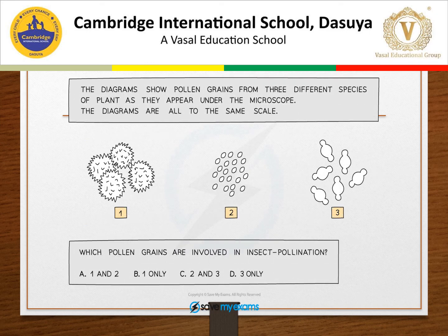Here the diagram shows pollen grains from three different species of plants as they appear under a microscope. Which pollen grains are involved in insect pollination — one and two, one only, two and three, or three only? This is an assignment.